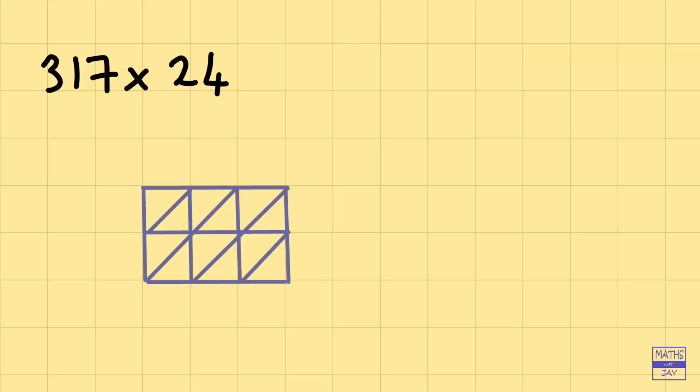And then we'll start at the top left-hand corner. So first of all, writing our three-digit number 317. And then our two-digit number 24. And now all we need to do is multiply together each of the pairs of numbers.